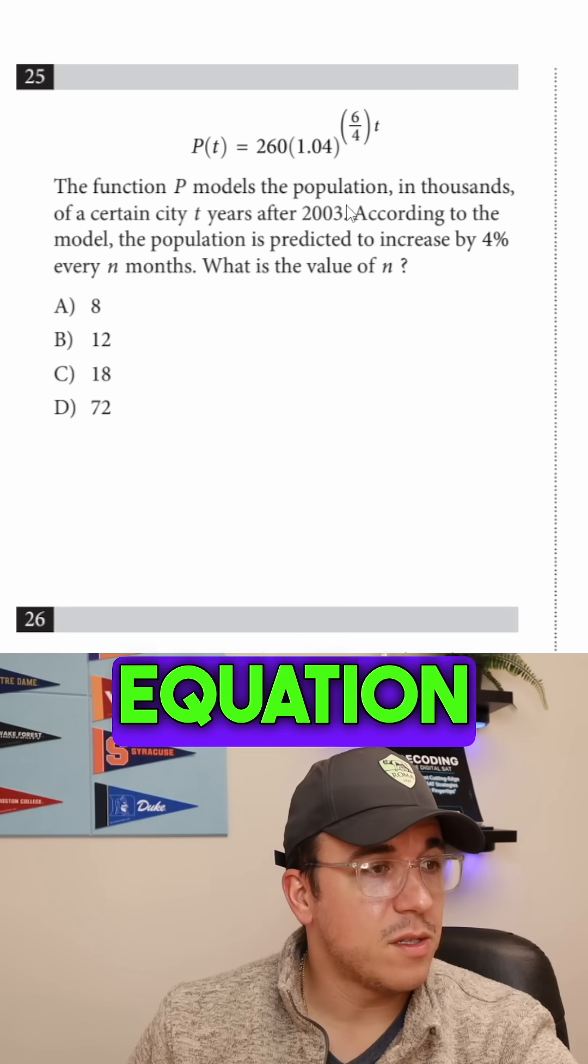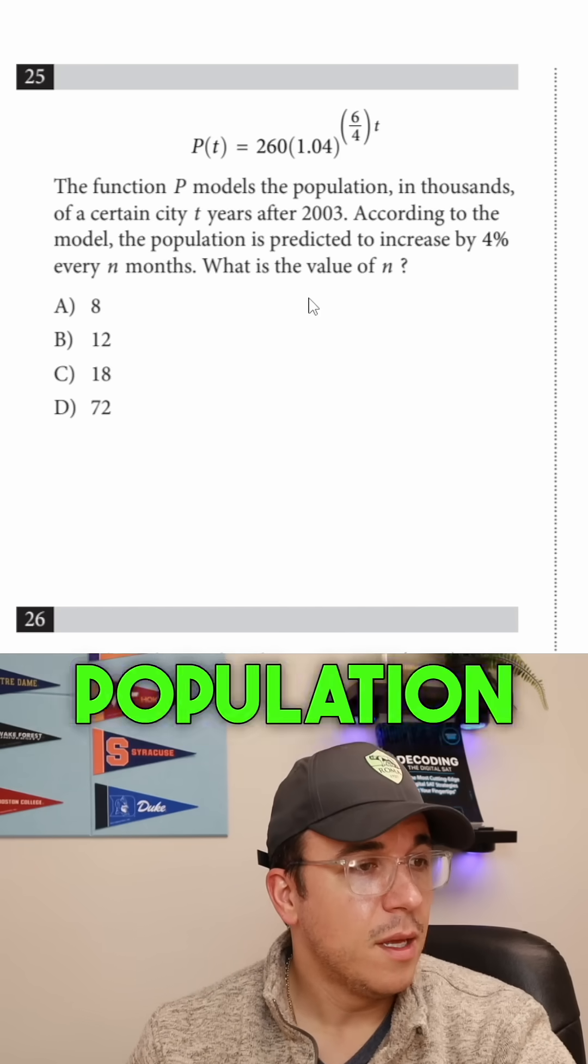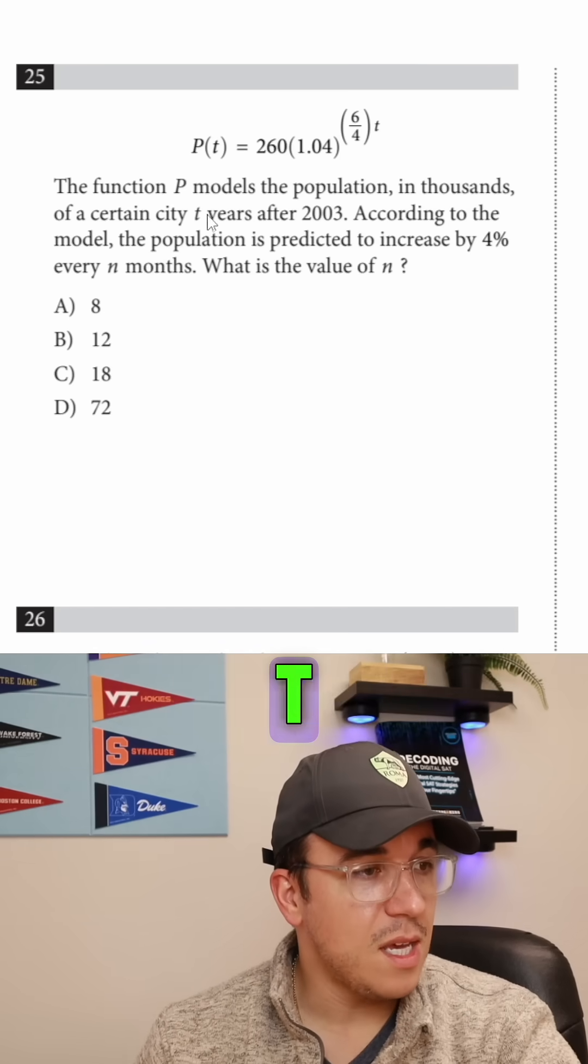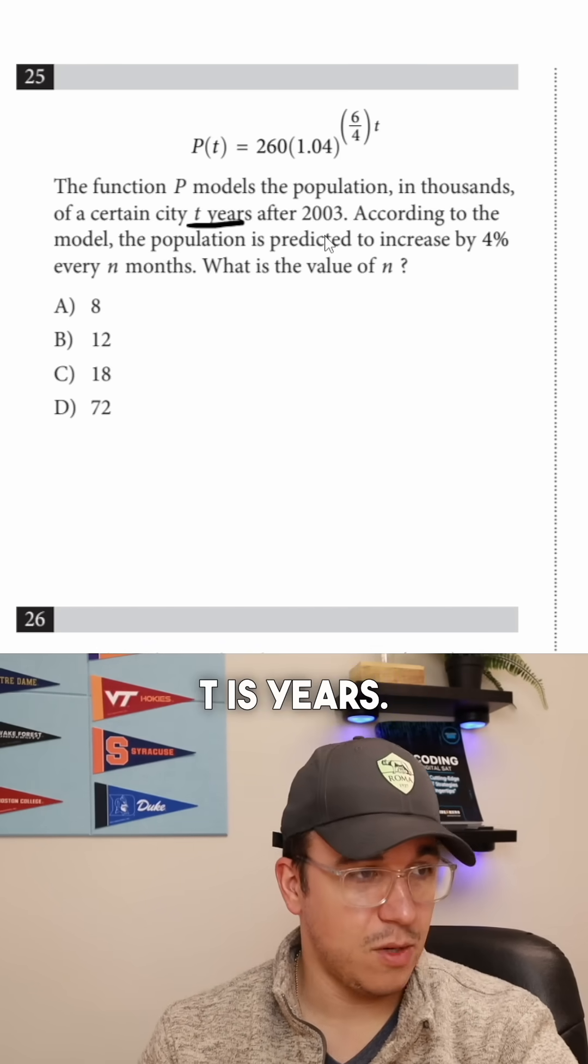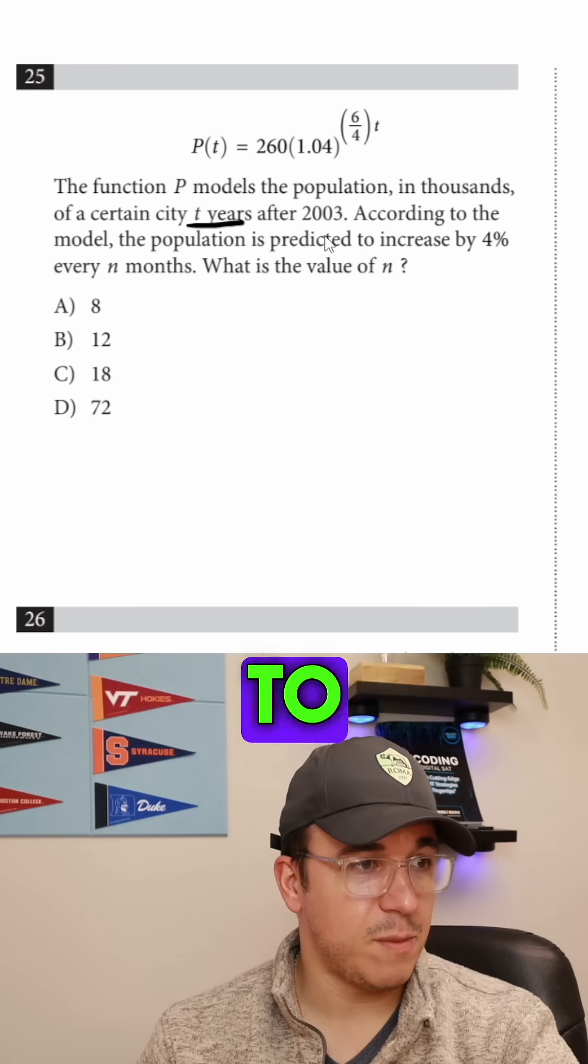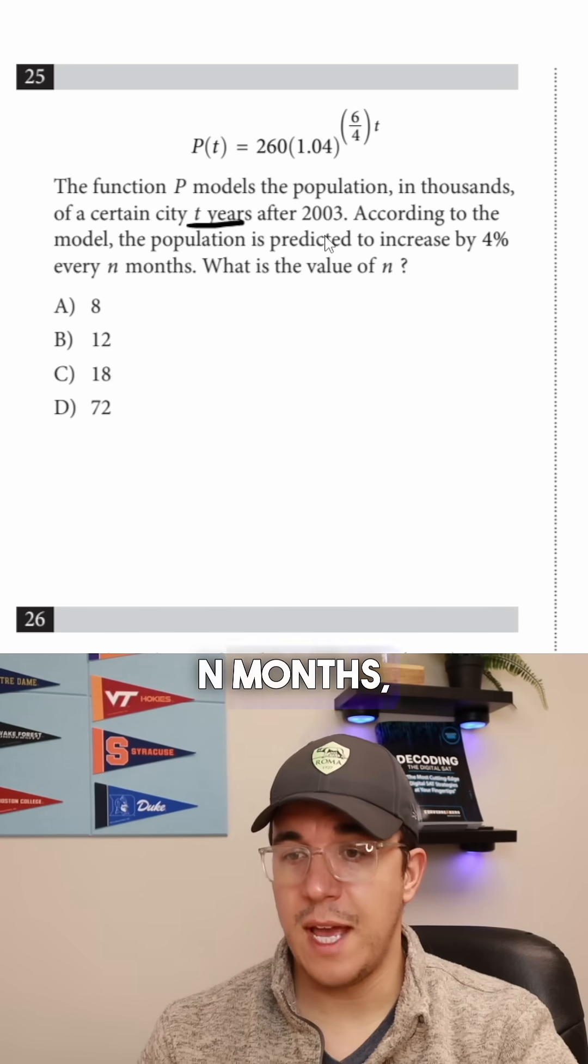So they're giving us this equation which models a population in thousands of a certain city, T years. We need to remember that's very important, T is years. So according to the model, the population is predicted to increase by 4% every N months.